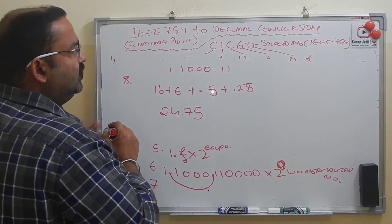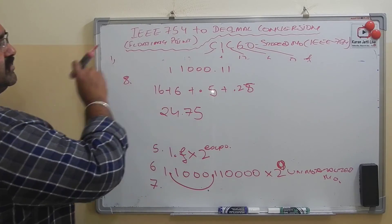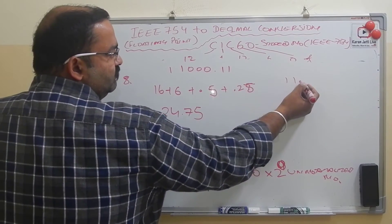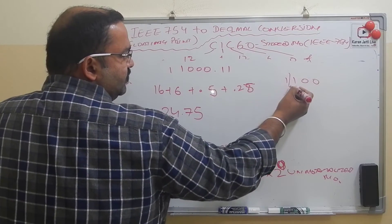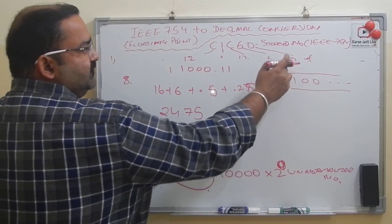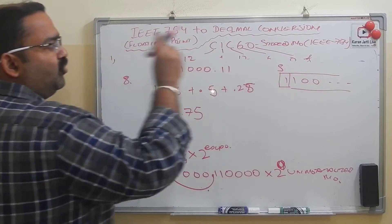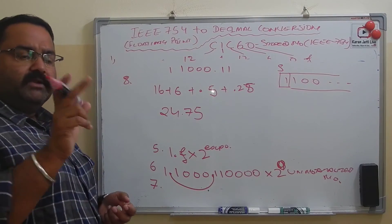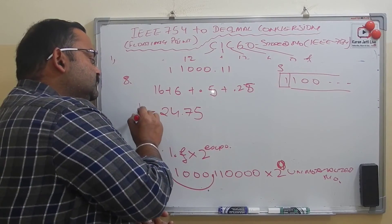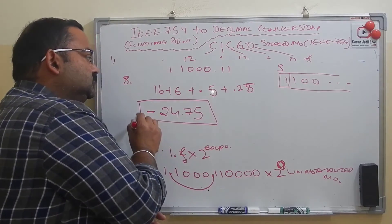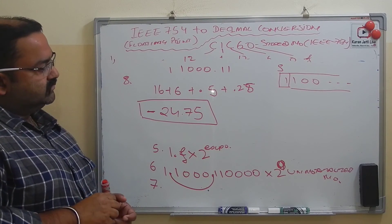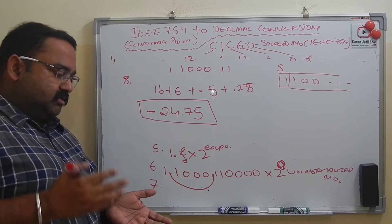By mistake I deleted part of the work. The first hex digit was C, which is 12 — that's 1100 in binary. After dividing into different bit groups, the first bit (sign bit) was 1 in this case, which means the number is negative. So the final result is minus 24.75.